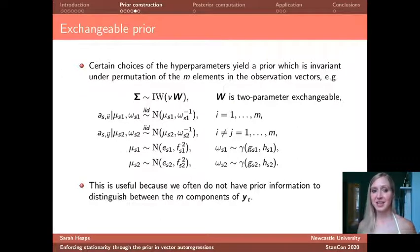So one of the nicest, I think, is the following. So if we're careful in our choice of hyperparameters in this distribution that I've just described, we end up with a prior which is invariant under permutation of the n elements in the observation vector. So in other words, we end up with a prior that imparts exactly the same information irrespective of how we order the elements in the original observation vector. And this is often very useful because often in multivariate time series analysis, we don't really have any prior information to distinguish between the n components of our observation vector.